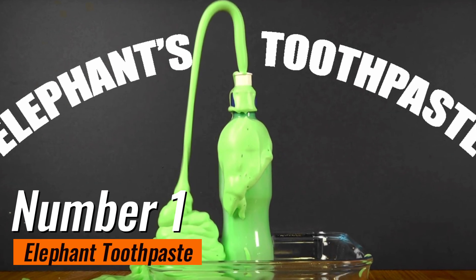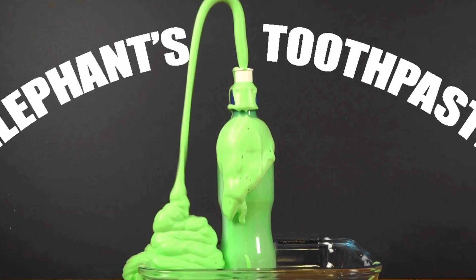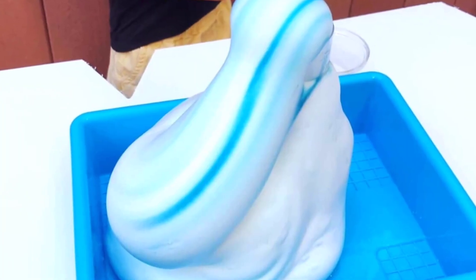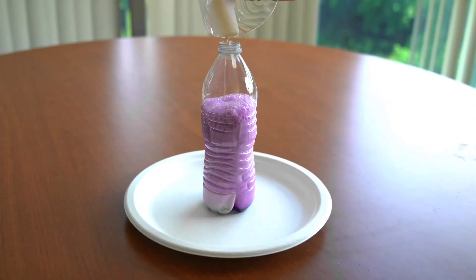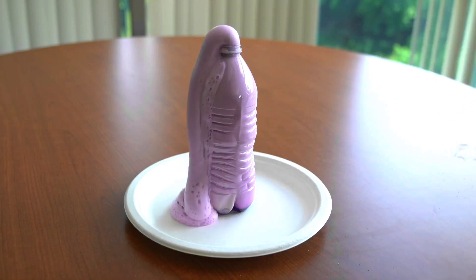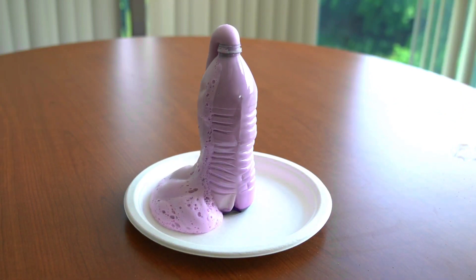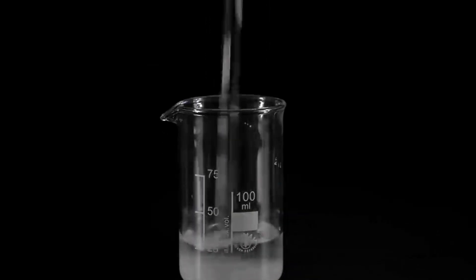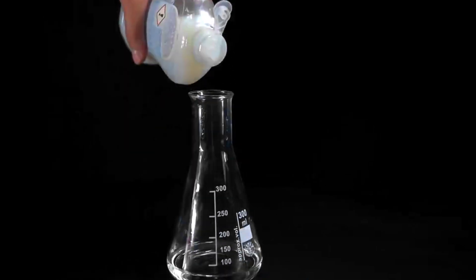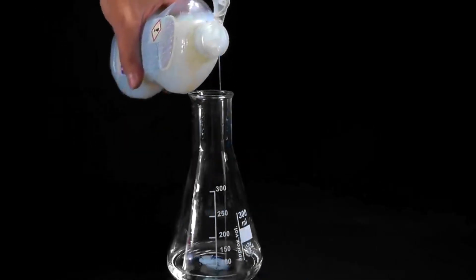Number 1. Elephant toothpaste. The elephant toothpaste experiment is an explosive and visually stunning science activity that demonstrates the reaction between hydrogen peroxide and potassium iodide. To perform this experiment, you will need hydrogen peroxide, liquid dish soap, a small plastic bottle or flask, and potassium iodide.